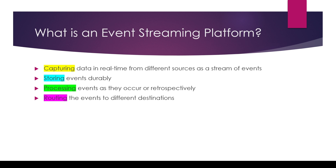The next step is we store these events durably so they are not lost. The third step is processing events as they occur or retrospectively — an event streaming platform makes it possible to process events in real time or to go back in time and reprocess some events. The last step is routing events to different destinations. For instance, we can receive an event from a microservice, process it, and then send it to a database. So Kafka can capture data in real time, store events durably, process them in real time or retrospectively, and route them to different destinations.